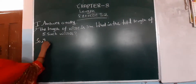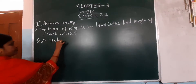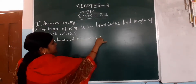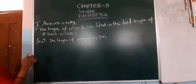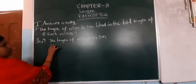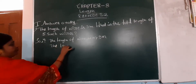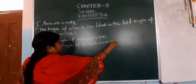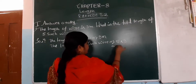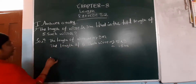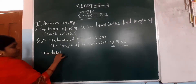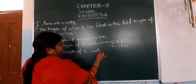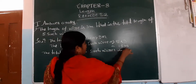Solution: the length of wire is 3 meter. For 5 wires, 5 multiplied by 3 equals 15. The total length of 5 such wires is 15 meter.